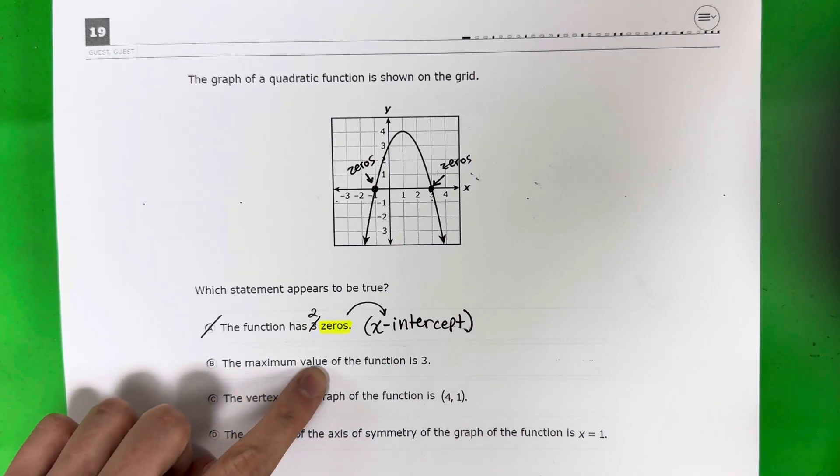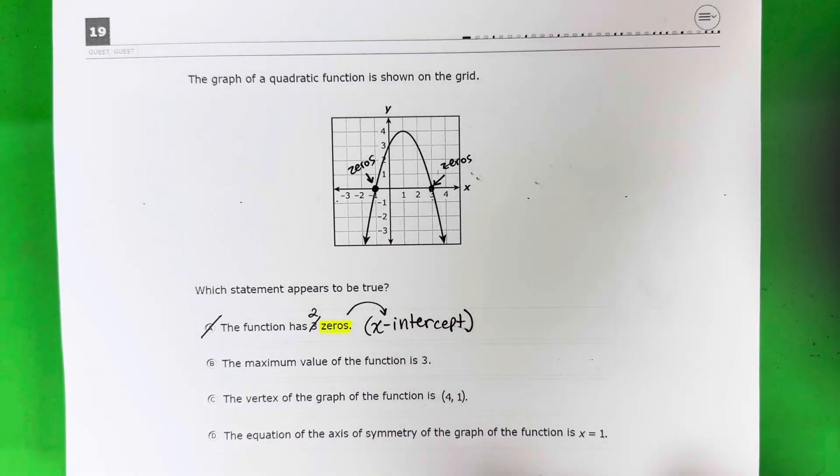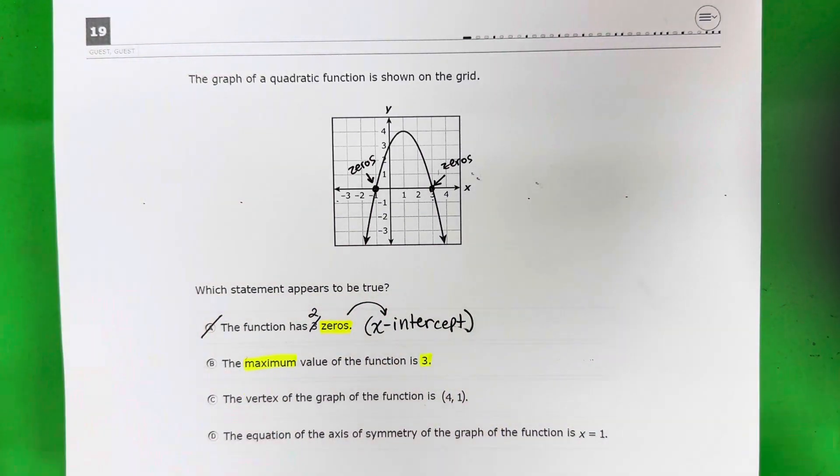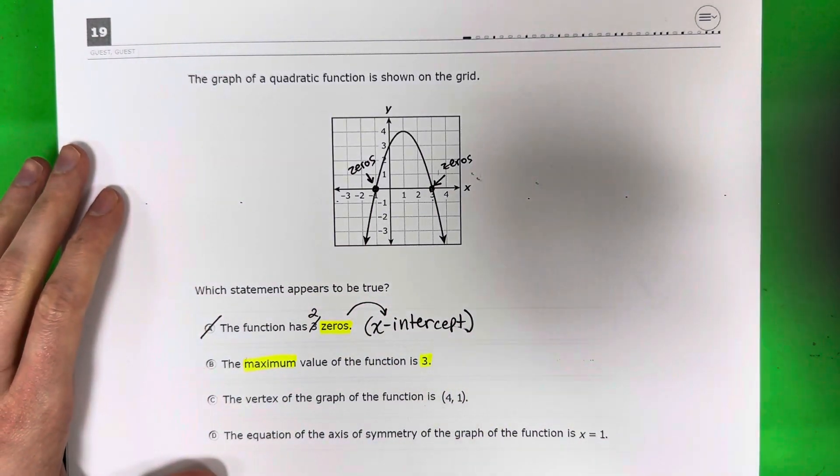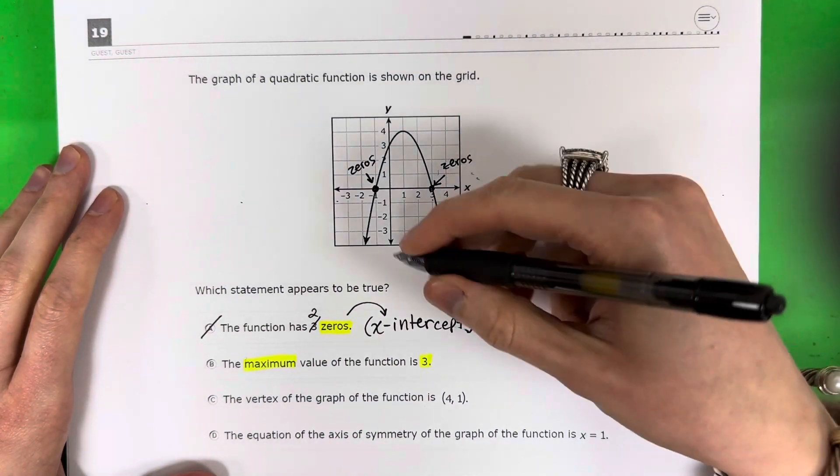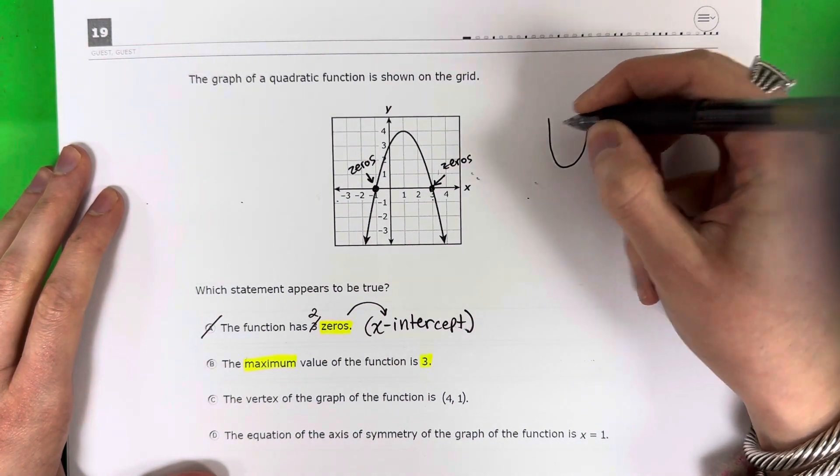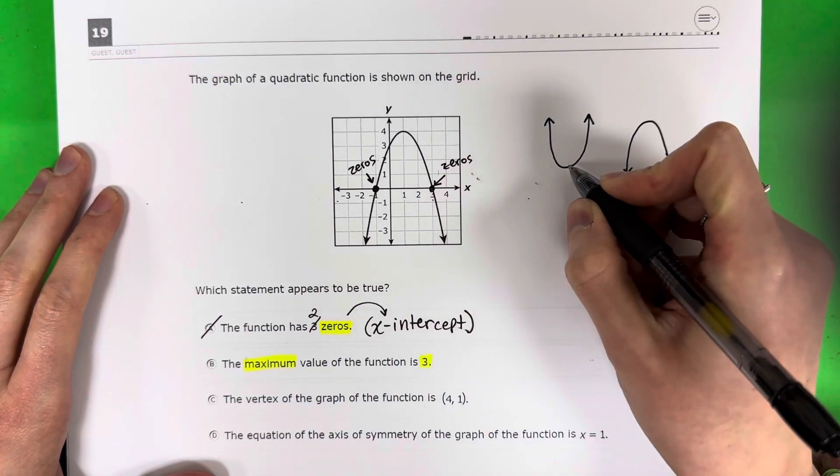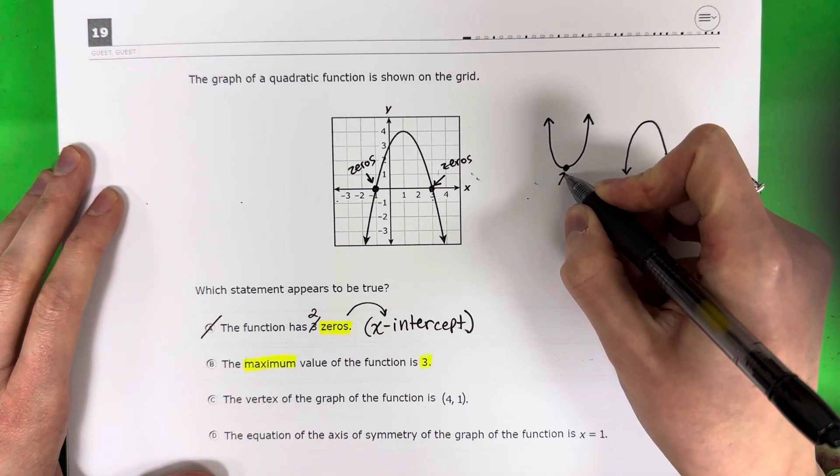B, the maximum value of the function is three. So I have a maximum and it's three. Okay, so let's talk about minimum and maximum real quick. So the parabola can be two shapes. It can be like this where it opens up, and it can be like this where it opens down.